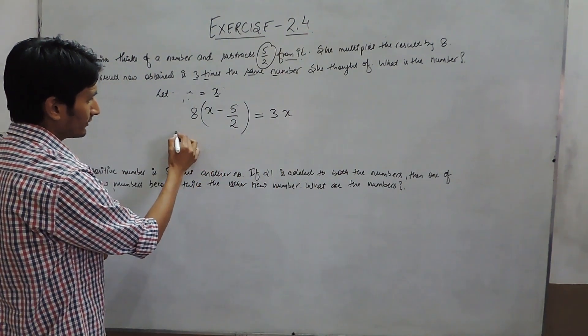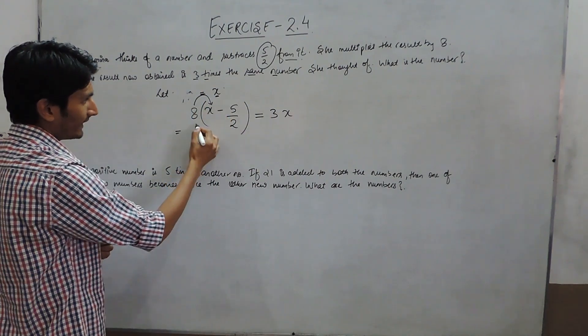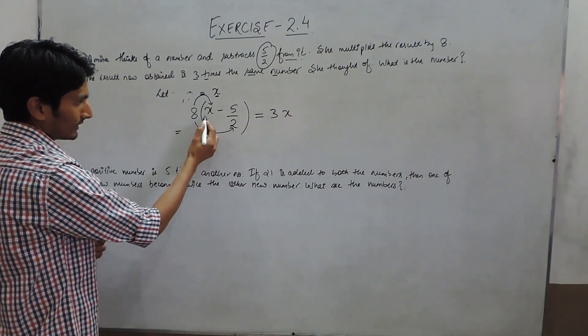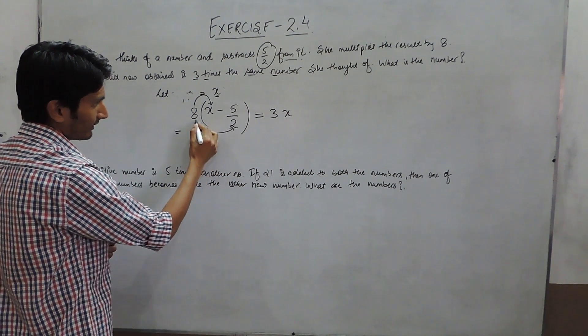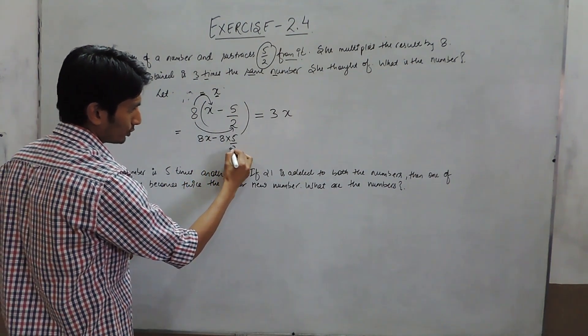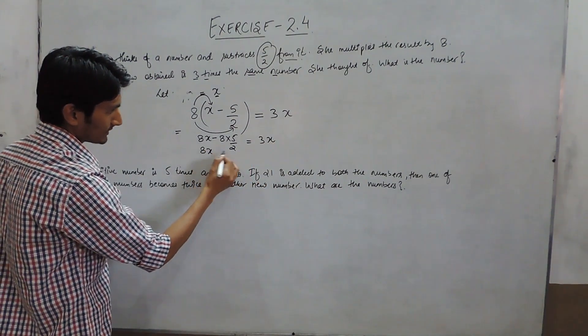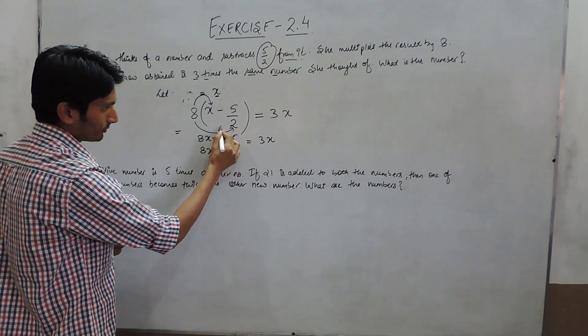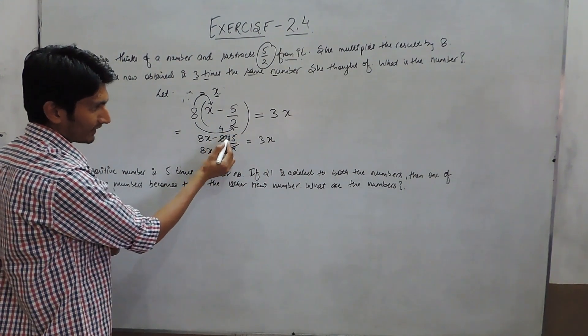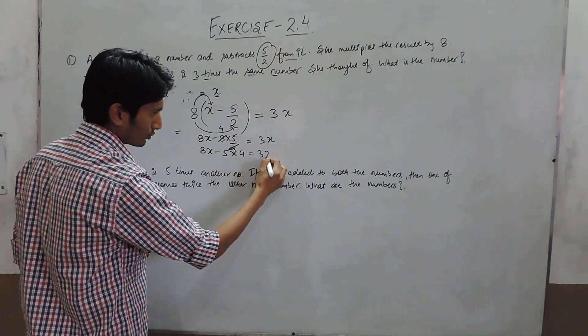Solving this question, firstly we have to open this bracket. We multiply 8 by both the terms. This will give 8x, and when 8 is multiplied by 5/2, it gives 8 × 5/2 which equals 3x. This is 8x minus 20, which equals 3x.